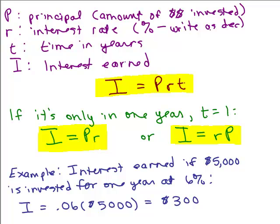But if we're talking about one year, T is one and we can write principal times rate or rate times principal and we have a little example of investing $5,000 at 6% for a year, we would earn $300 in interest. So we're going to use this interest equals rate times principal for this problem.